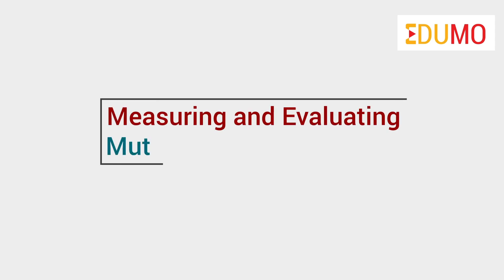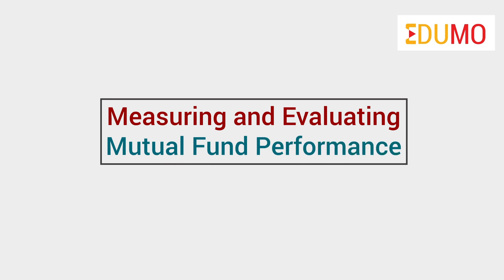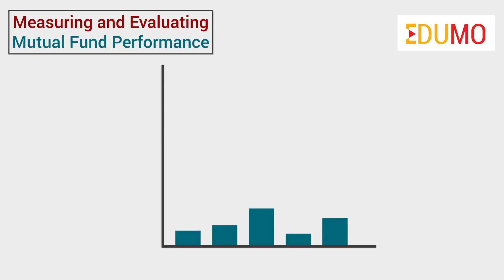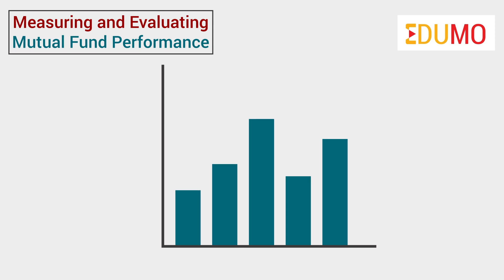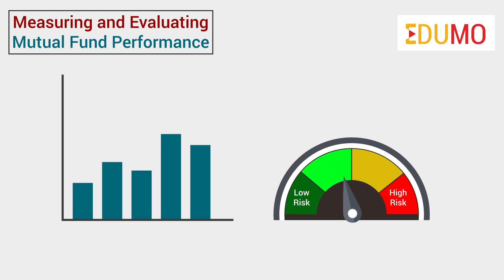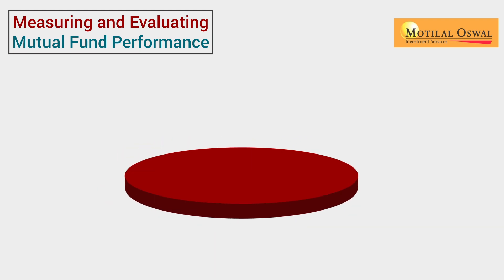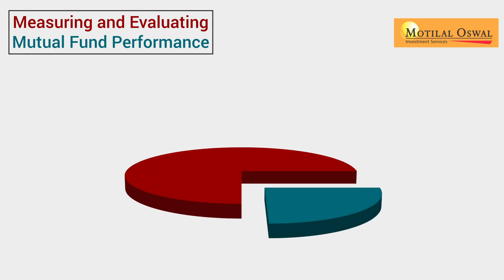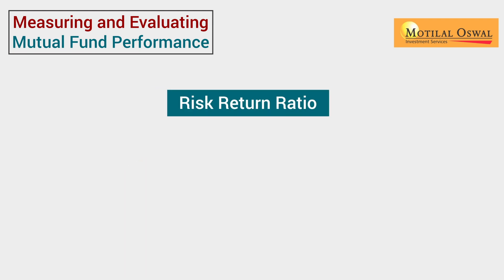Hi! In this video, we will be talking about the ways through which we can measure and evaluate mutual fund performance. The most popular way to measure the performance of a mutual fund is to use risk-return indicators. These ratios help us understand if the fund we are choosing can compensate us for the risk we are undertaking by investing in it. There are four widely used indicators we will discuss in this video.